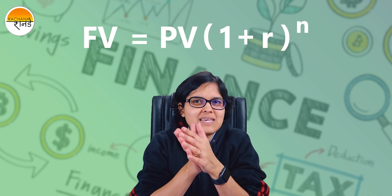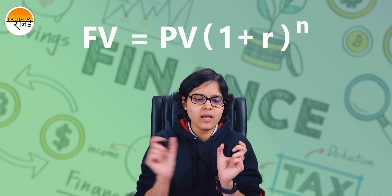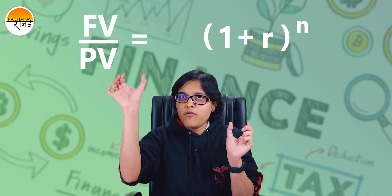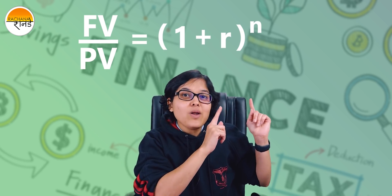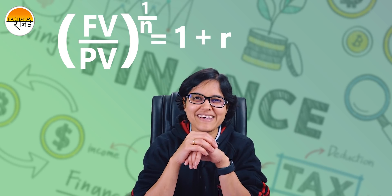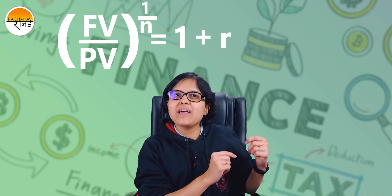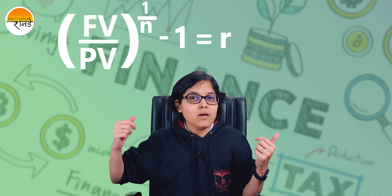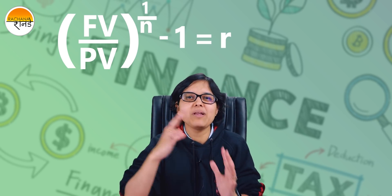To calculate CAGR, we need to calculate how much is R. Mathematically, taking PV to the left-hand side: FV divided by PV equals 1 plus R raised to the power N. Transferring the power N to the LHS gives: FV divided by PV raised to the power 1 by N equals 1 plus R. So the final formula is: CAGR equals FV divided by PV raised to the power 1 by N, minus 1.